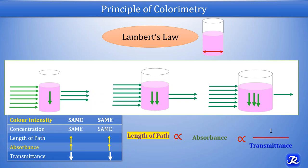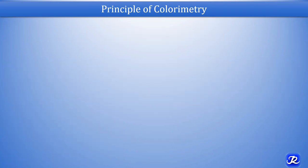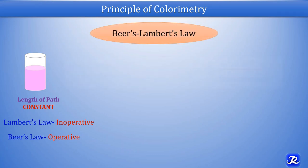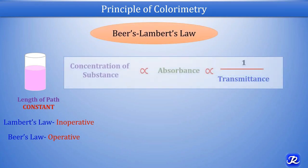Length of path is directly proportional to absorbance and inversely proportional to transmittance. If we keep the length of path constant by using the same cuvette, Lambert's law becomes inoperative and Beer's law becomes operative. Then it becomes Beer-Lambert's law, which states that concentration of substance is directly proportional to absorbance and inversely proportional to transmittance.